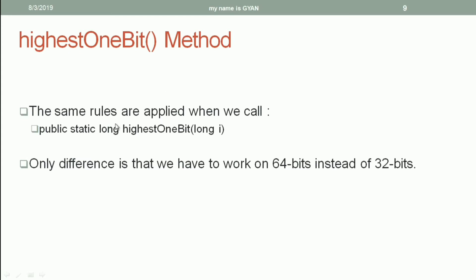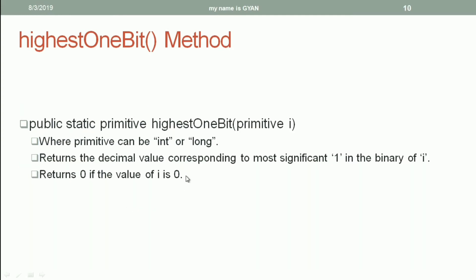The highestOneBit() method in the class long is the same as in the class integer — the same rules apply. The only difference is that it returns a primitive long, accepts a primitive long, and works on 64 bits instead of 32 bits. The formal definition: in both classes the method is public and static, accepts a primitive value, and returns the decimal value corresponding to the most significant 1 in the binary of the input. It returns 0 if the input value is 0.